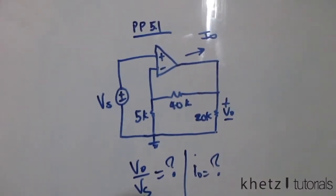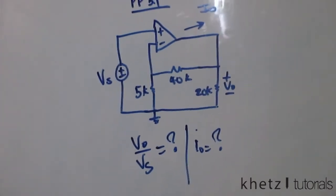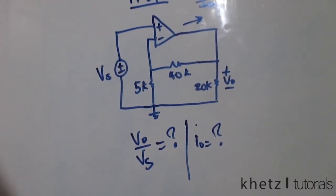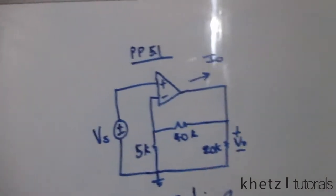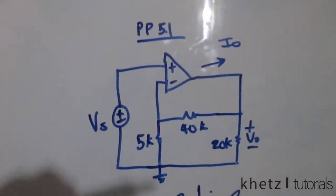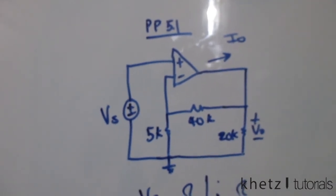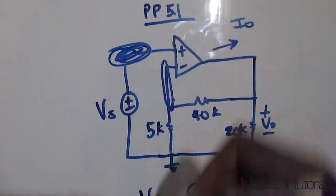Let's proceed. We will start by finding the closed loop gain vo divided by vs. Here's what you should know about op-amps, which basically applies to just about any op-amp: the voltage which you have at the input of one terminal equals the voltage at the other terminal.